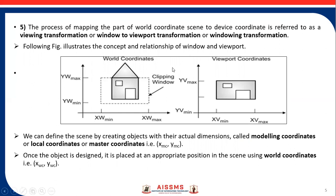This figure illustrates the concept of the relationship between window and viewport. We can define the scene by creating objects with their actual dimensions — y max, y min — these are the actual dimensions called modeling coordinates, or local coordinates, or master coordinates, that is x of MC and y of MC. Once the object is designed, it is placed at the appropriate position in the scene using the world coordinate system, that is x of WC and y of WC. The scene may be displayed on different devices, so it must be mapped to proper dimensions. World coordinates are then represented in normalized coordinates, x of NC and y of NC, usually between 0 and 1, making the system independent of various display devices.